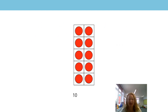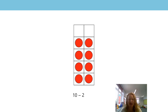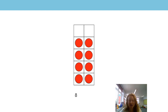So here we've got our tens frame and it's full, so we know straight away that we have ten. And we're going to subtract two — there are the two we're going to take away, shown in blue. I'm going to move them out and everything else slots down, so now we have eight. Those two at the bottom we just slid out, and now we've got eight. So ten subtract two gave us eight.